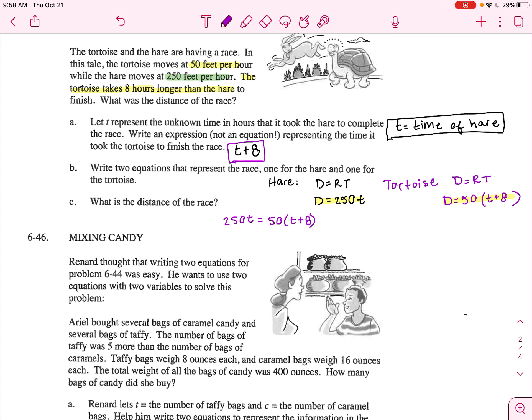Now we're solving for the time. So 250T equals 50T plus 400. Solving for T, I'll subtract 50T on both sides. We get 200T equals 400.